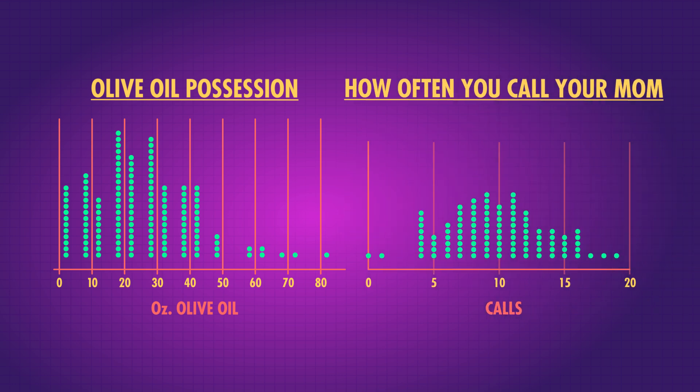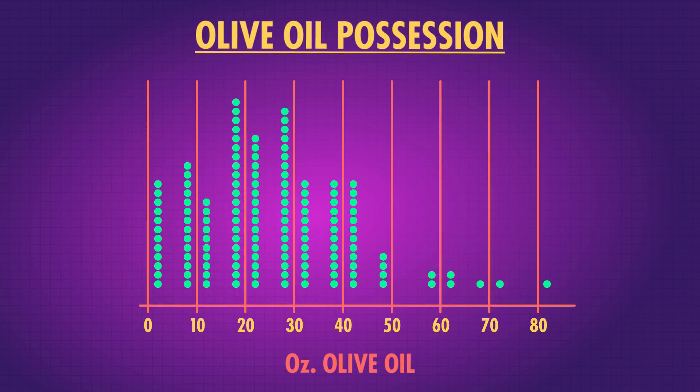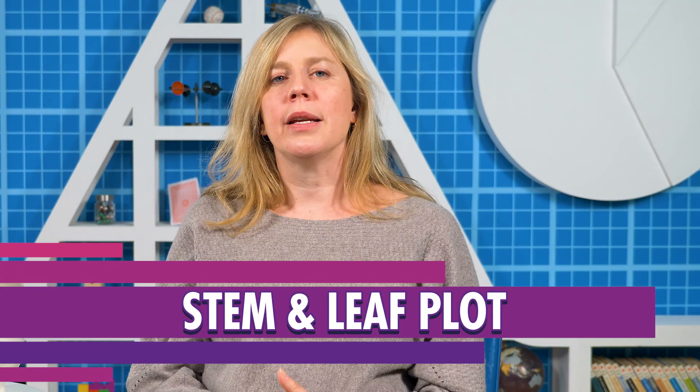Check out this dot plot of how often this sample of people called their moms this month. This gives us a nice way to explore the general shape of our data, but we still lose information about the individual data values, just like with the histogram. Occasionally we want that extra information — enter the stem and leaf plot. A stem and leaf plot is a cousin of the dot plot. It also gives us information about data and their frequencies by stacking objects on top of each other.